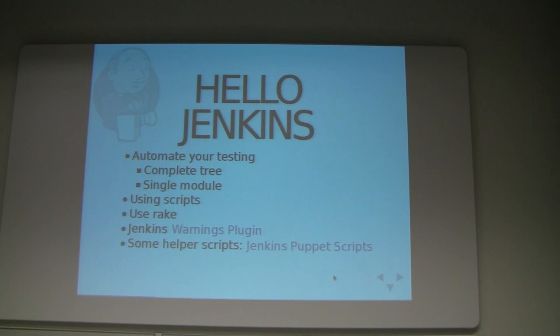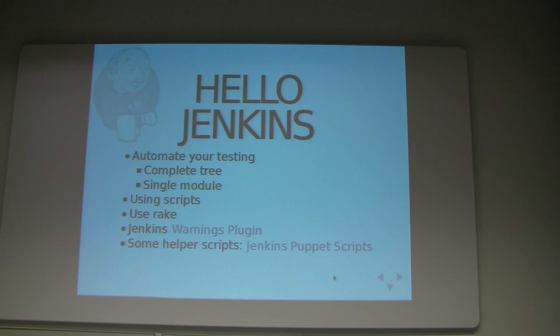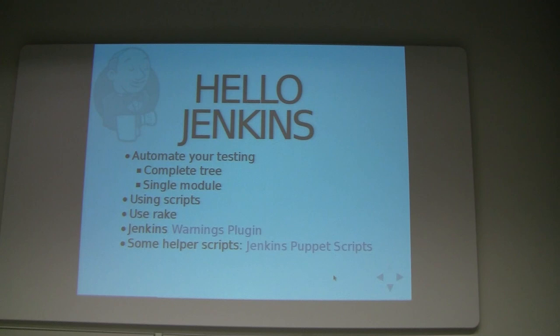Hello Jenkins — time to implement some Puppet testing in Jenkins. You can either test your complete tree or a single module; it will all depend on your specific use case. You can either write custom bash scripts in Jenkins or you can use Rake — Rake being a Ruby tool. One particularly useful plugin for Jenkins is the Warnings plugin, which gives you a nice graph and lets you parse the different errors or warnings that Puppet Lint spits out. You can do the same for syntax checks, but you still need to add some custom code in Jenkins.